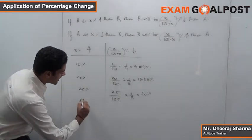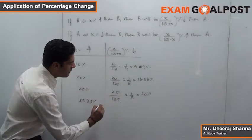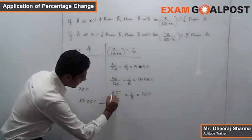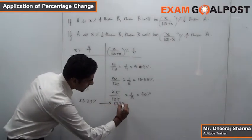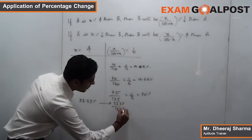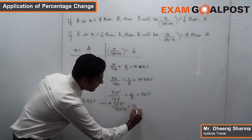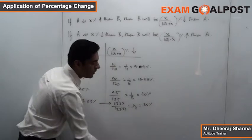Similarly do it for 33.33. It is simply a plug and play thing. X is 33.33 divided by 133.33, which will come out to be equal to 1/4, and 1/4 is nothing but 25 percent.